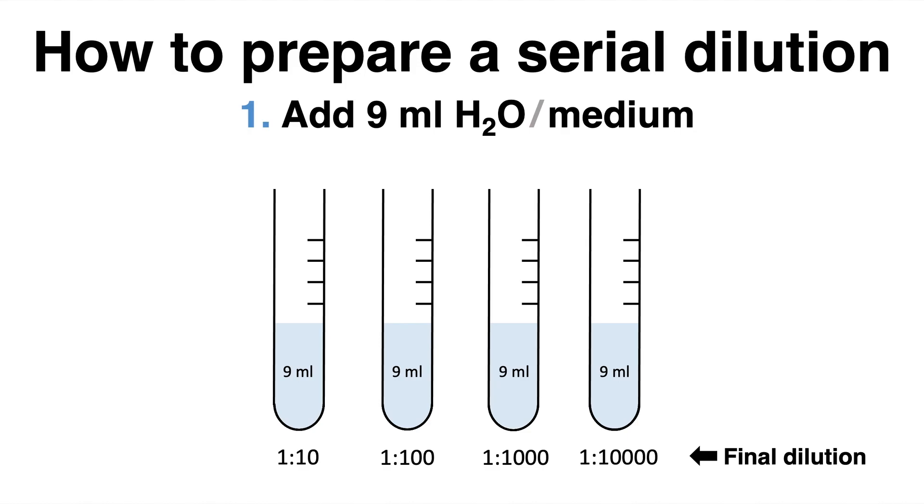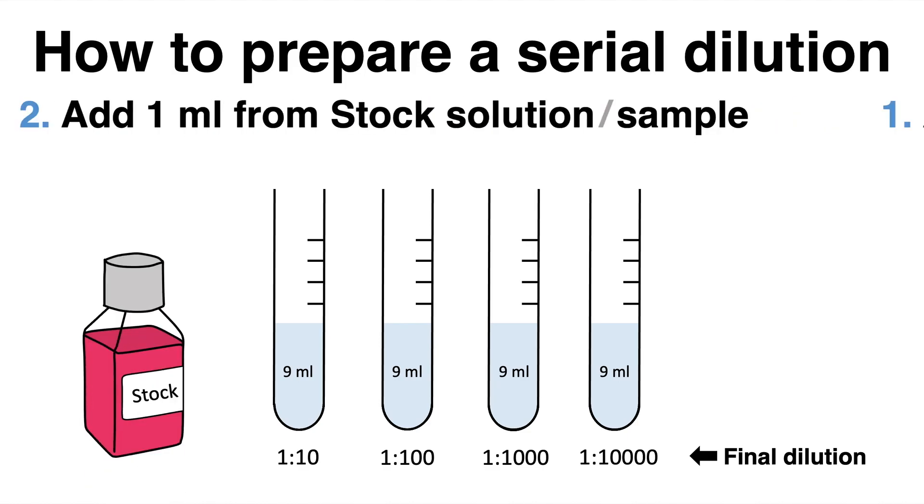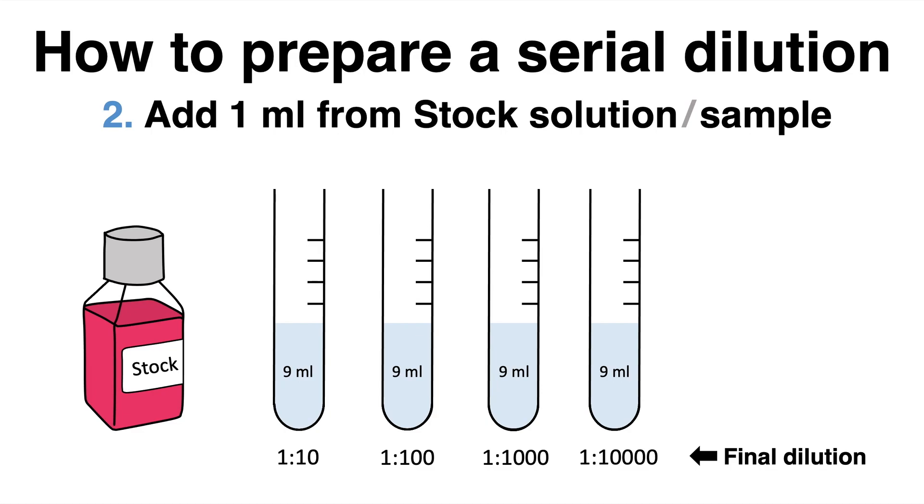In this case here, the content that needs to be diluted will be from a stock solution. To reach a dilution of 1 to 10, 1 ml of the stock needs to be added to the 9 ml of water. This makes a total volume of 10 ml now.